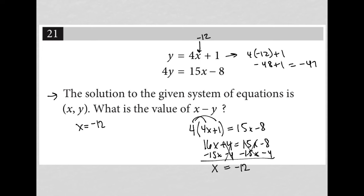So I know x is negative 12 and y is equal to negative 47. When I figure out what x minus y is, that would be negative 12 minus negative 47, which really turns into negative 12 plus 47.